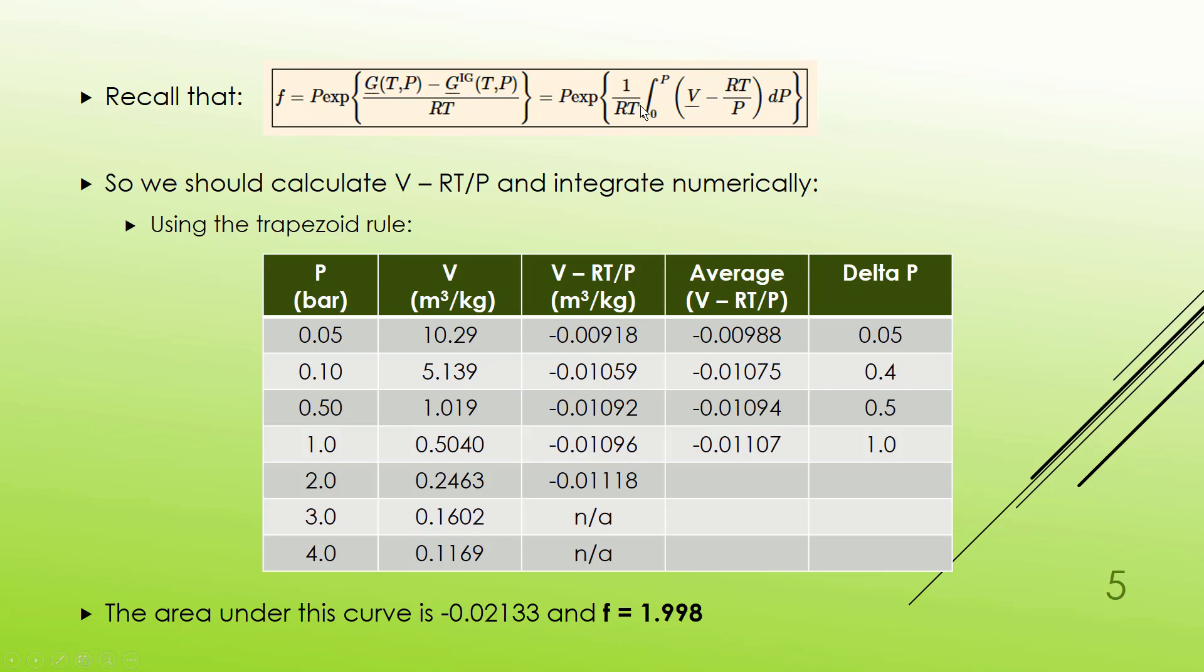gets the integral. Take that answer, divide by RT, take the exponential of that answer, and multiply that by P. And when you do this, you find that the area under the curve was about negative 0.02, and we end up with F as 1.998.